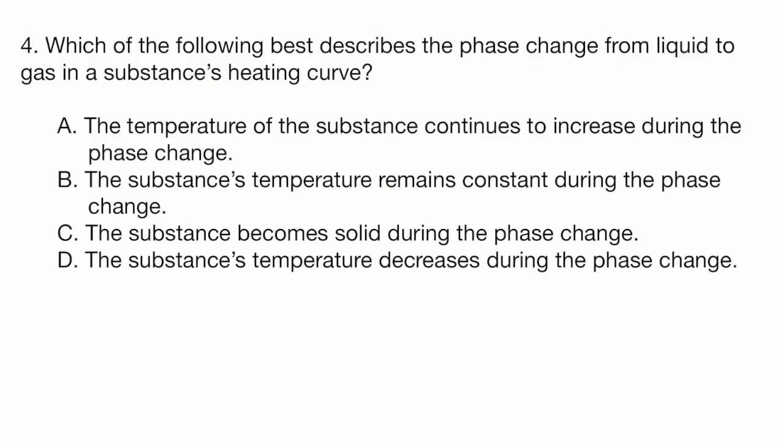Finally, question 4. Which of the following best describes the phase change from liquid to gas in a substance's heating curve? A, the temperature of the substance continues to increase during the phase change. B, the substance's temperature remains constant during the phase change. C, the substance becomes solid during the phase change. Or D, the substance's temperature decreases during the phase change. So we're going from a liquid to a gas. So automatically, that means that we are heating up. To go from a liquid to a gas implies that we have an increase in temperature. So I already know that C and D are not the correct answers.